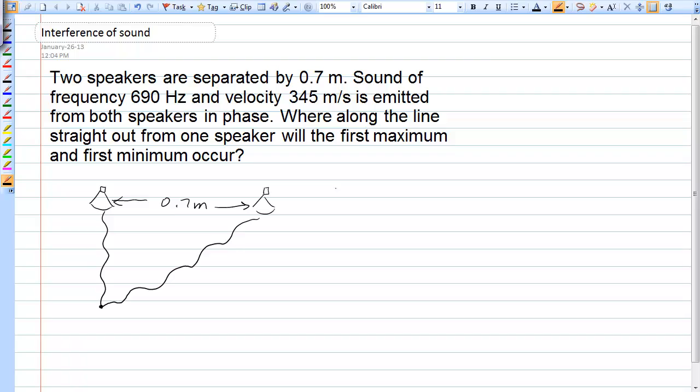So the speed of the sound at this particular temperature is given as 345 meters per second. The frequency is given as 690 hertz. So we can immediately calculate the wavelength of that sound by using the